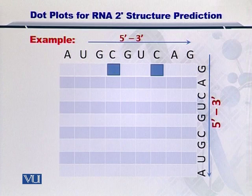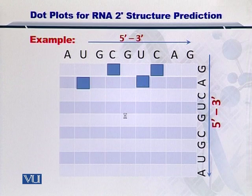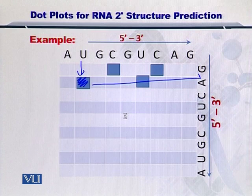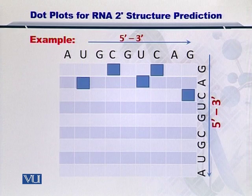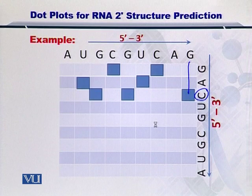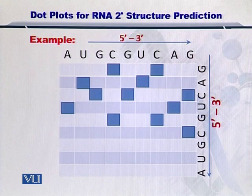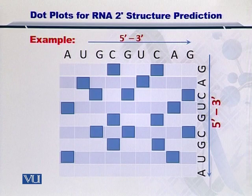You move on and scan the second nucleotide A on the right side. It is complementary to U, as shown here, so you put a dot here as well. You scan again and find that A is also complementary to this U, and therefore you have another dot. In this way, you keep scanning each nucleotide and try to find its complementary nucleotide in the strand. In this case, C was complementary to this G, this G, and this G as well, so you have three dots in your plot. Upon completing the exercise for all nucleotides, you will be able to fill up the entire square.